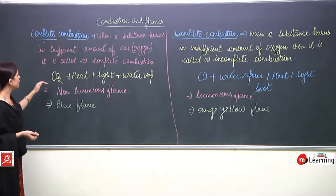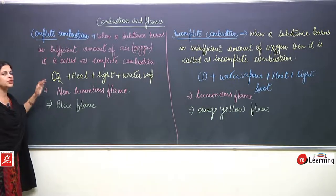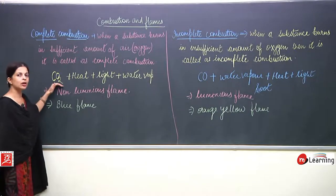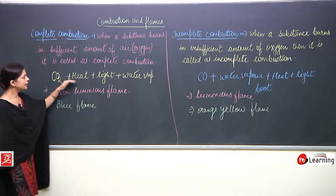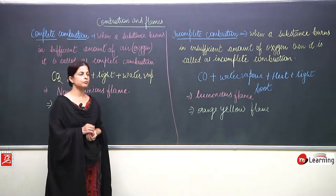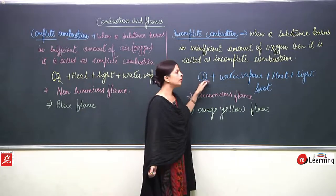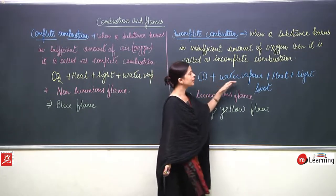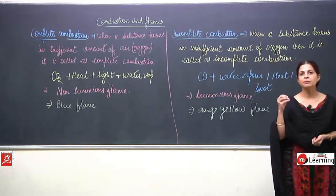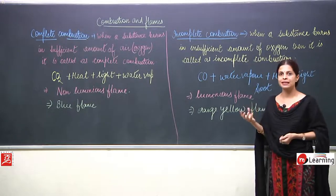When I talk about incomplete combustion, what are the things that come out — the by-products? For complete combustion: carbon dioxide, heat, light, and water vapor are formed. For incomplete combustion: carbon monoxide will be formed, water vapor will be formed, heat and light will be formed, and along with that some unburned hydrocarbons will be left, which can be seen — it can be known as soot.